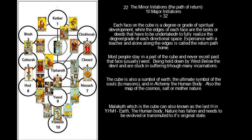There are 22 minor initiations to the path of return, and then there are 10 major initiations, which equals 32. When you look at this diagram to the left, you will see a tree of life, which has 10 Sephirot. There are different paths that connect each Sephirah — those can be associated with 22 paths, which are associated with 22 Hebrew alphabets, which are associated with 22 minor initiations to spiritual awakening. Once you go on all 22 paths, you can go more into the major initiations.